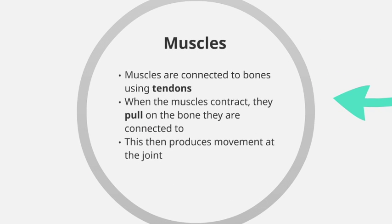Quick recap on some things we have previously looked at. Muscles are connected to bones using tendons — tendons are connective tissues that allow bones to be attached to muscles. When the muscles contract they pull on the bone through the tendons they're connected to, which then produces movement.